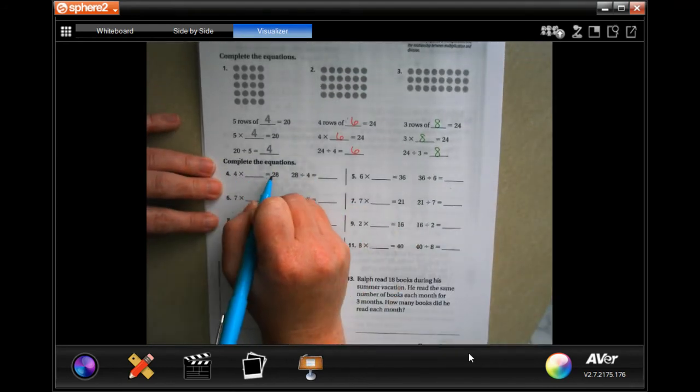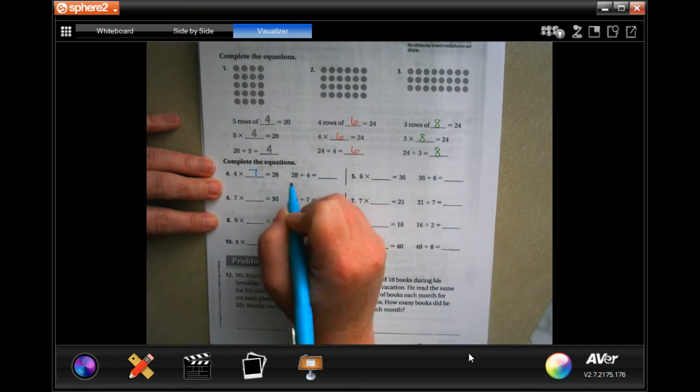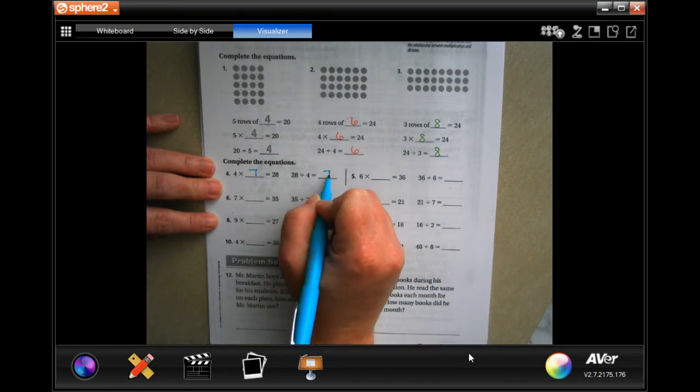Four times what is 28? Four times seven is 28, which also means that 28 divided by four is seven.